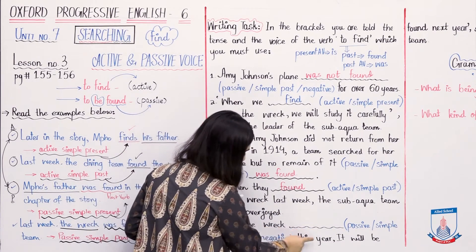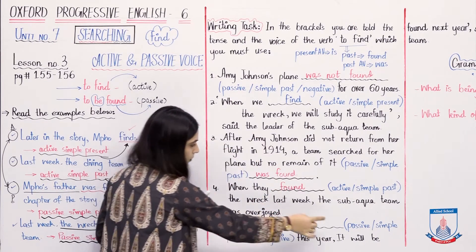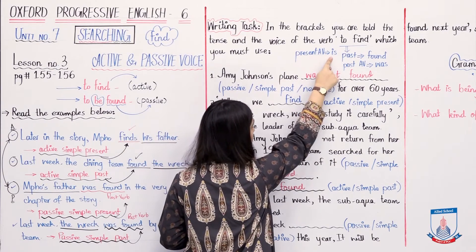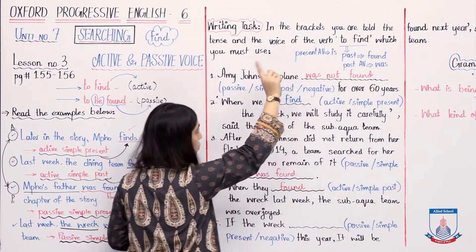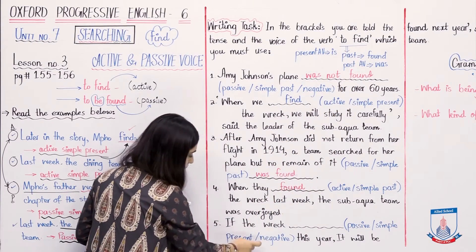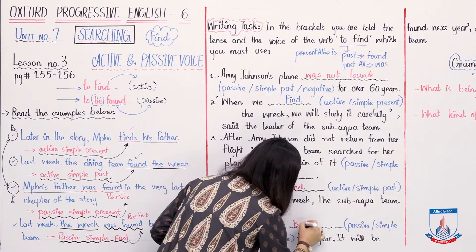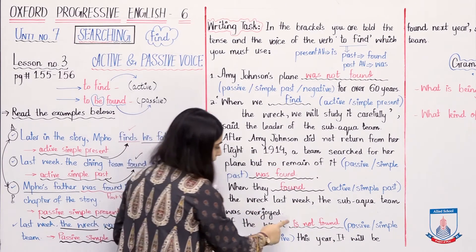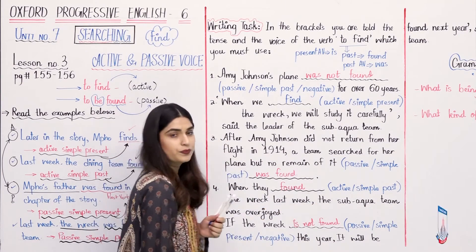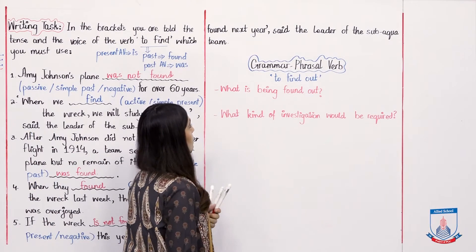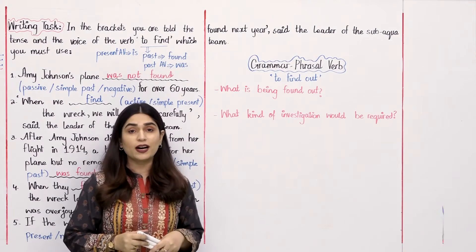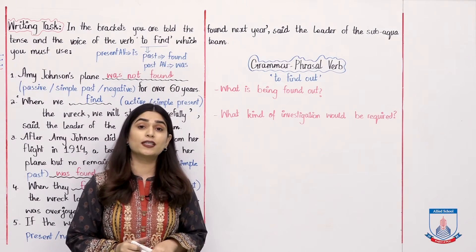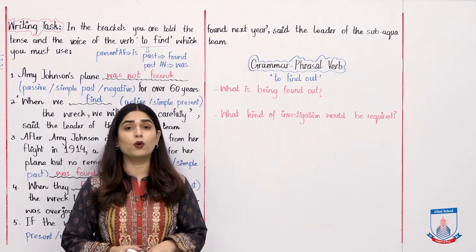Number five: If the wreck is not found this year, it will be found next year, said the leader of the sub-aqua team. If the wreck is not found this year — we need negative passive simple present. For passive, the verb form is 'is found.' For negative, we add 'not.' So: 'is not found.' In passive voice we always use the past form of the verb. 'If the wreck is not found this year, it will be found next year.' Now you understand how to write active or passive voice.